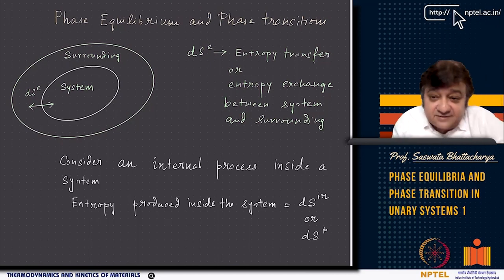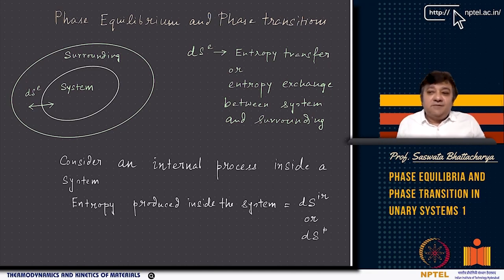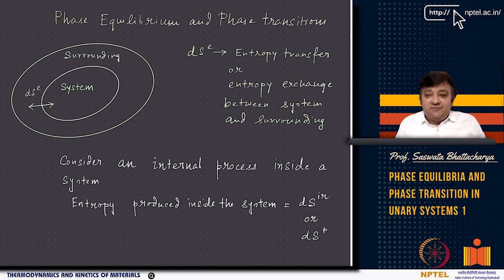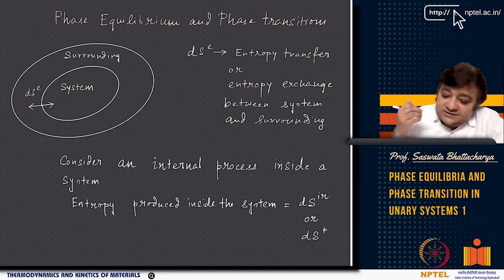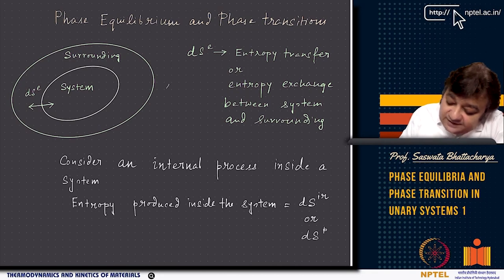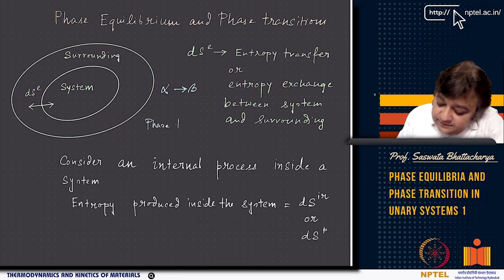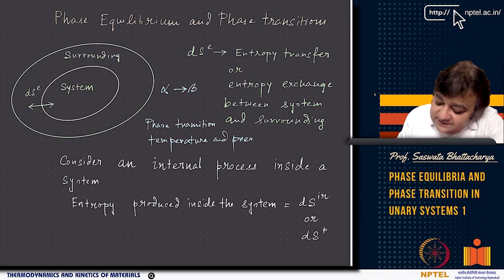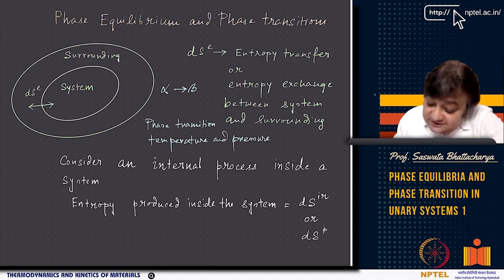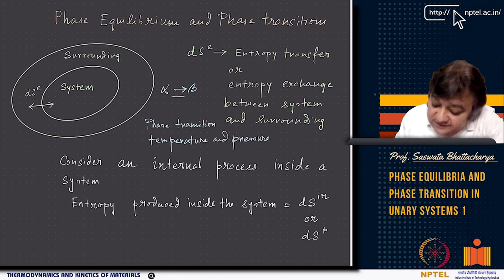When we talk about phase transition, common examples that come to mind are water evaporating, water boiling and turning to vapor, water freezing and becoming ice, or ice melting and becoming water. Basically, some phase alpha is transforming to beta. When we look at phase transition, we characterize a phase transition temperature and pressure — a given pressure and temperature at which alpha can transform to beta or vice versa.